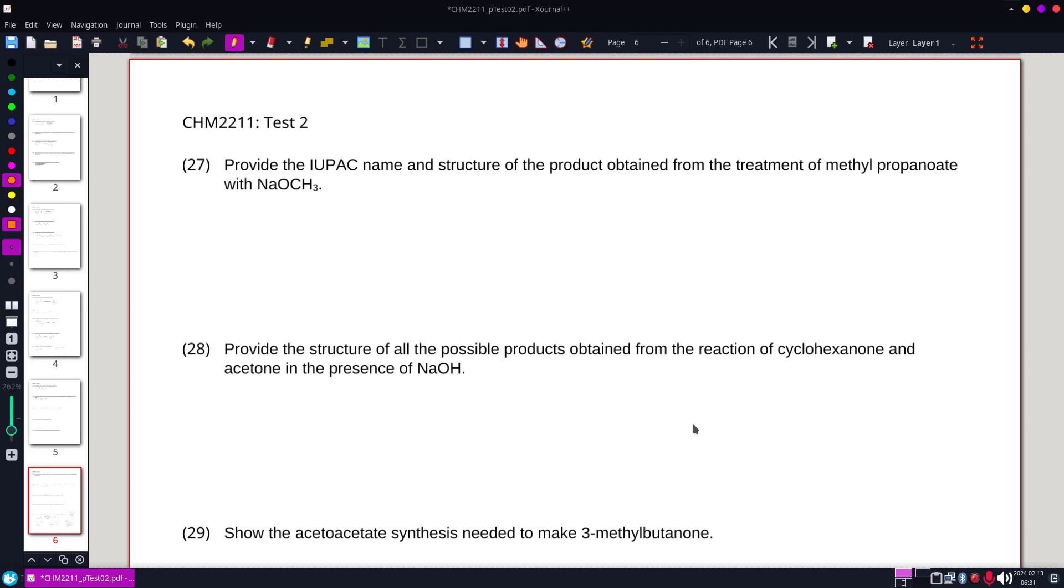Provide the IUPAC name and structure of the product obtained from the treatment of methyl propanoate with NaOCH3. I said pentanoate, but that's propanoate.